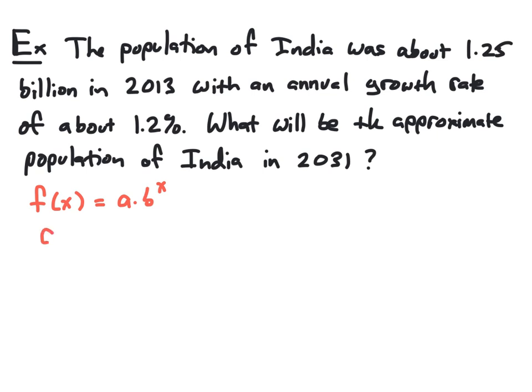The value of a is basically given to us. a is the initial value of our quantity. So if we're basing this on the population of India in 2013, a is going to be 1.25 billion. Here, we're going to let a be 1.25, and we're going to measure everything in billions.